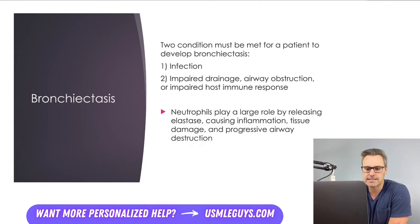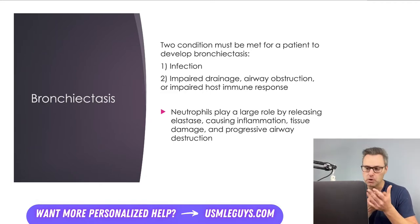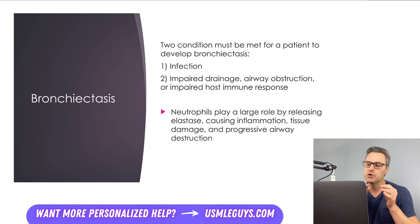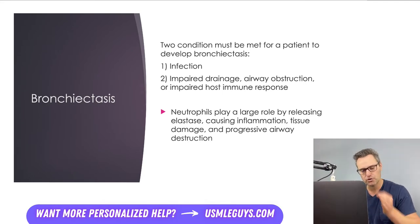Next up is bronchiectasis. For a patient to develop bronchiectasis, two conditions must be met: the patient must be infected with a lung pathogen, and the patient must have some difficulty resolving the infection — whether due to an inadequate immune response, impaired drainage, or airway obstruction. The key immune cell is the neutrophil, particularly neutrophilic proteases such as elastase. The infection grows, neutrophils release inflammatory and destructive proteases, causing tissue damage and progressive airway destruction.